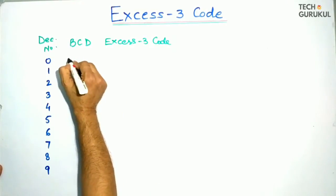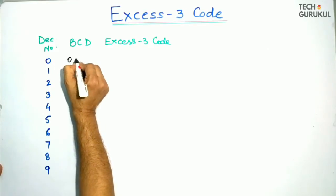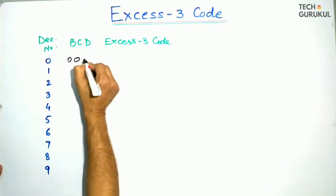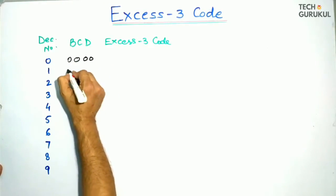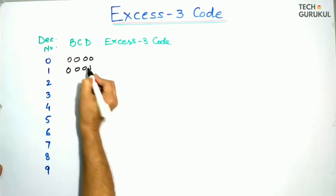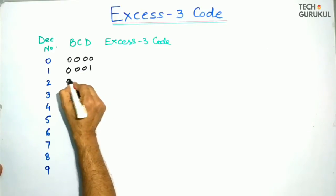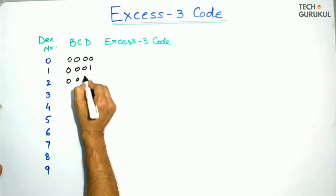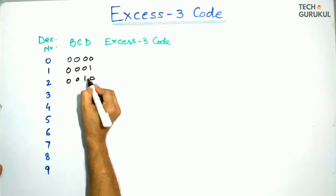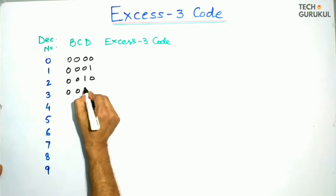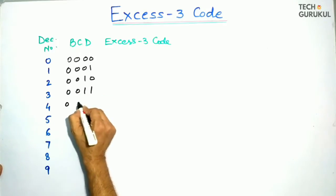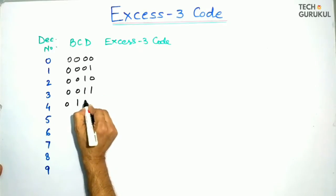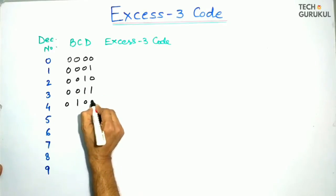For 0, the BCD code is 0000. For 1, it is 0001. For 2, it is 0010. For 3, it is 0011. For 4, it is 0100.